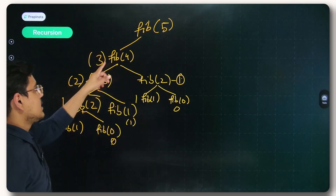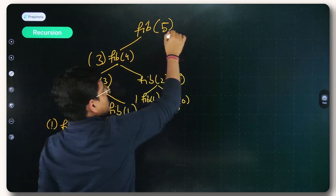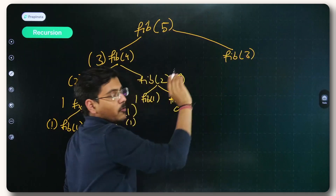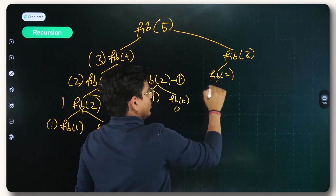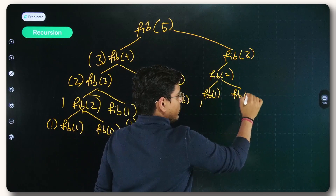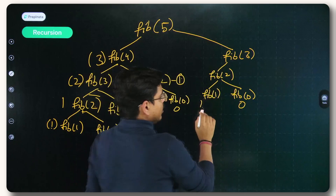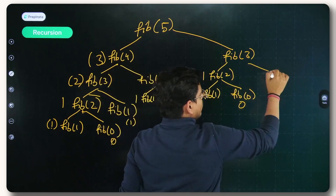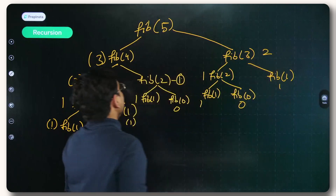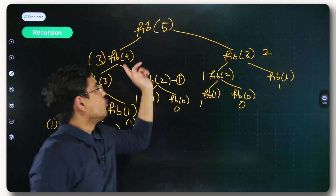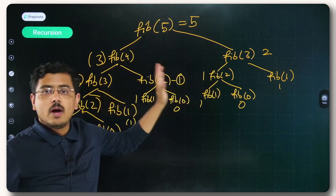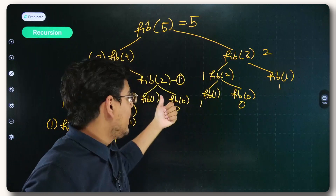As soon as 3 comes as the value for Fib(4), it goes ahead for the second part — Fib(3). It computes Fib(3) the same way: Fib(2) splits to Fib(1)=1 and Fib(0)=0, giving 1, then Fib(1) returns 1, so 1 plus 1 equals 2. Now 3 plus 2 equals 5, which is the final answer. This is how actual recursion takes place for the Fibonacci sequence.